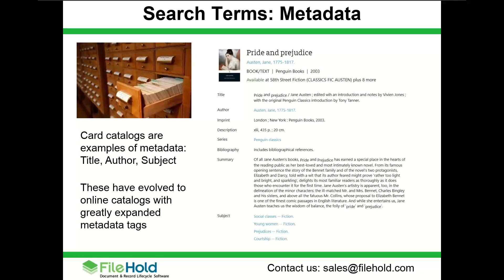We've evolved that into an online catalog. Here's an example from the New York Public Library — their reference for Pride and Prejudice. You can see fields such as title, author, imprint, description, series, and bibliography. Those are all examples of metadata fields. If you think of it in FileHold terms, this is a schema for a book, and these are the tags for the information within it. This is how we use metadata within the system.